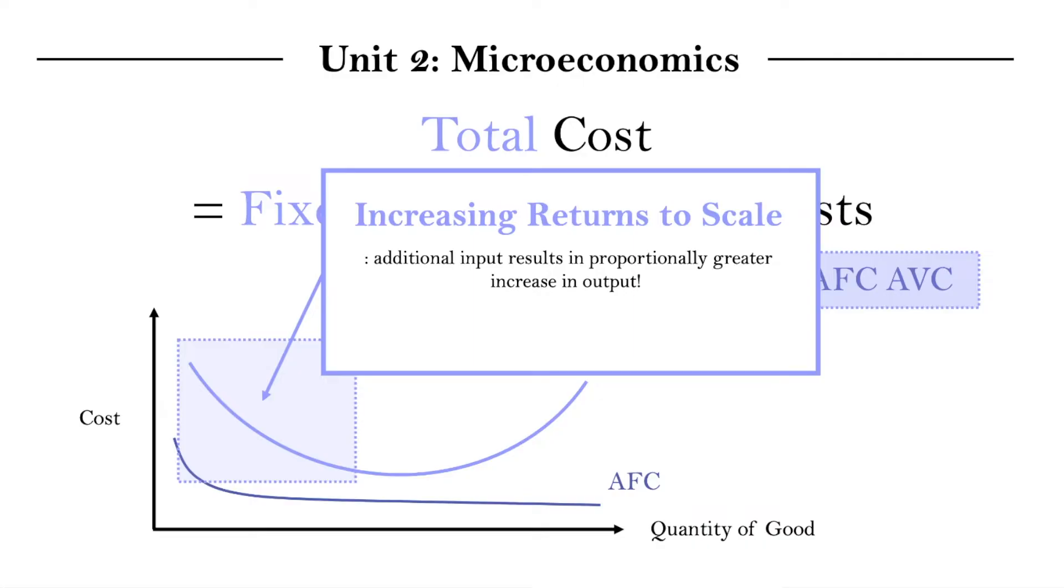And increasing returns to scale is when additional inputs result in a proportionally greater increase in output. For example, let's say you initially had one baker and one oven. The wage of the baker and the cost of the oven are different variable costs. And you get 5 cakes as an output.